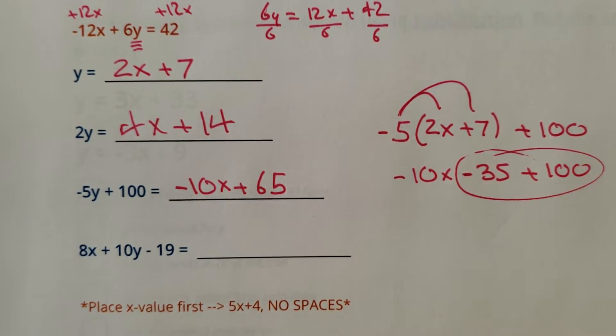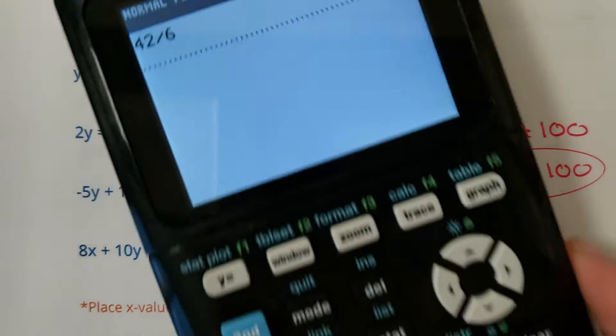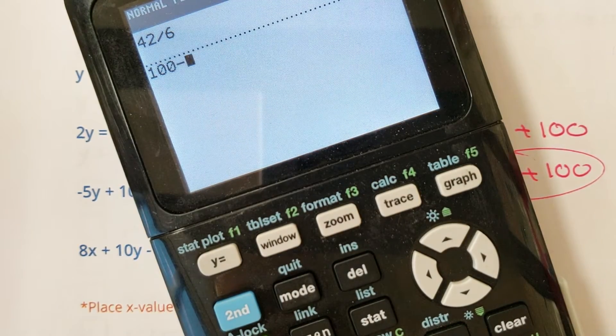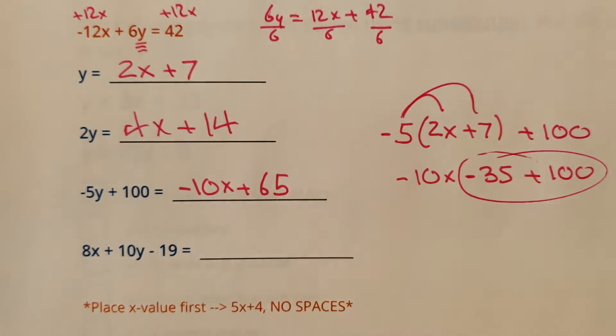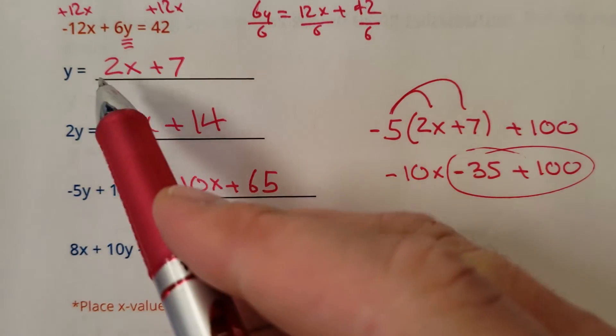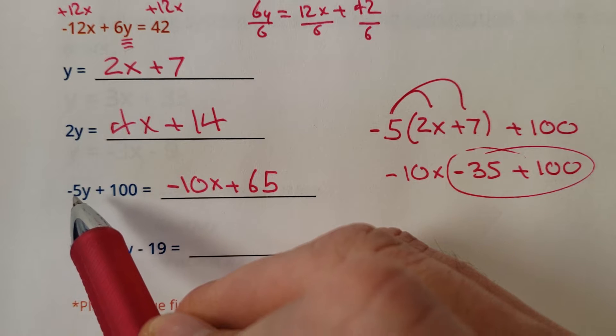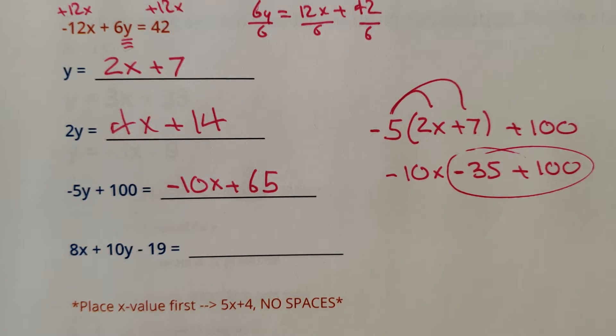Yeah, 100 minus 35, I believe, is 65. Just double checking here. Got it, 65. So again, solve for y. Double it. That's easy. Take it times negative 5 and add 100. No problem.